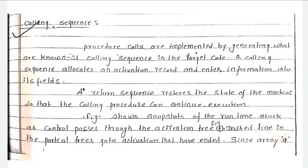What is an activation tree? The activation of a procedure or function is shown with the help of a hierarchical structure. And what is an activation record? It is a record that maintains the information of that procedure — temporary values, saved machine status, control link, access link, etc.